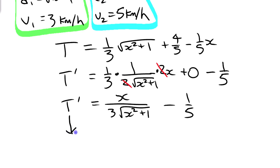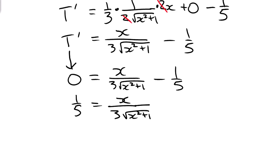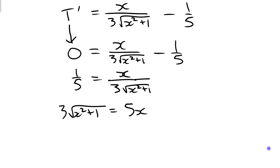To solve the equation x/(3√(x² + 1)) − 1/5 = 0 algebraically, we move the 1/5 to the other side and then clear out the fractions. Multiplying both sides by the lowest common denominator 15√(x² + 1), we end up with 5x on one side and 3√(x² + 1) on the other.